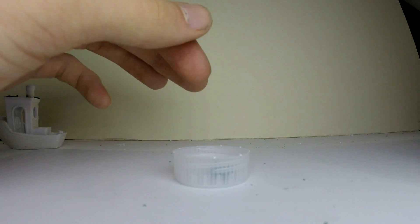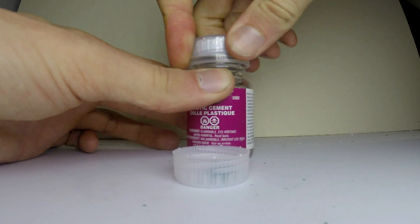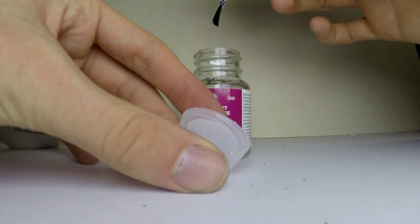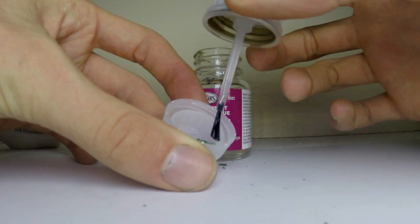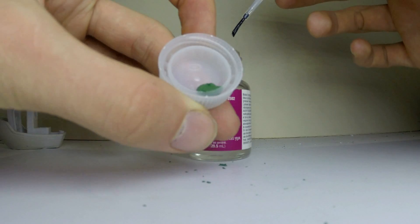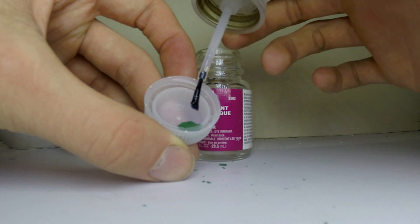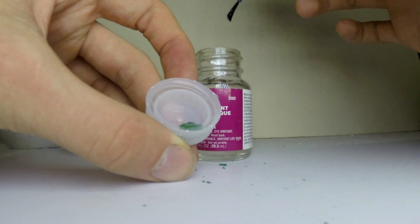Then take the model cement and apply one drop into the brush, and apply a drop or two right off to the side of the putty. There we go.